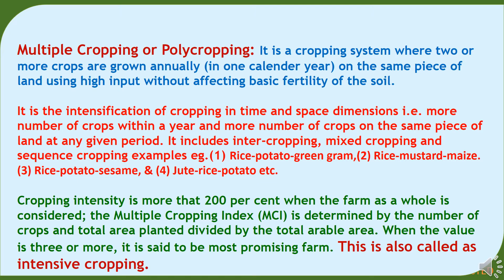Multiple cropping or poly cropping is the cropping system where two or more crops are grown annually in one calendar year on the same piece of land using high inputs without affecting basic fertility of the soil. It is the intensification of cropping in time and space dimensions — more number of crops within a year and more number of crops on the same piece of land at a given period. It includes intercropping, mixed cropping and sequence cropping. For example: rice, potato, green gram; rice, mustard, maize; rice, potato, sesame; jute, rice, potato, etc. Cropping intensity is more than 200 percent. When the farm as a whole is considered, the multiple cropping index is determined by the number of crops and total area planted divided by the total arable area. When the value is 3 or more it is said to be a most promising farm. This is also called intensive cropping.